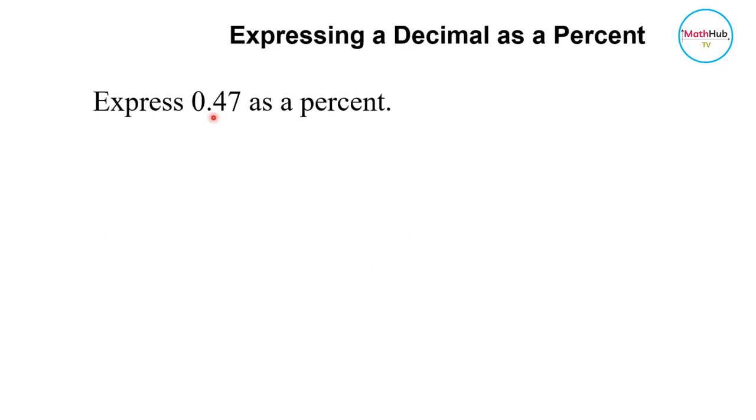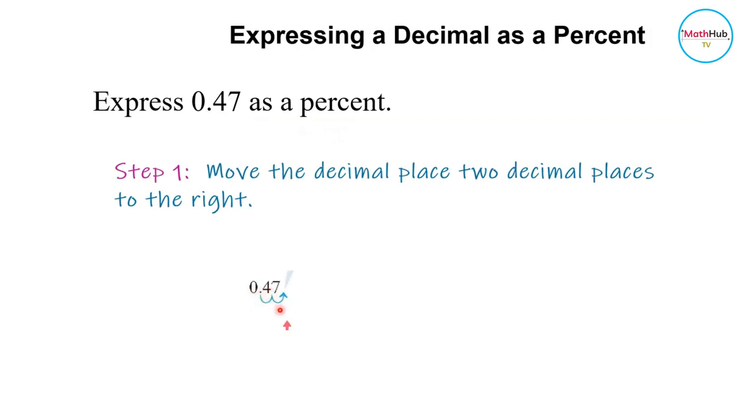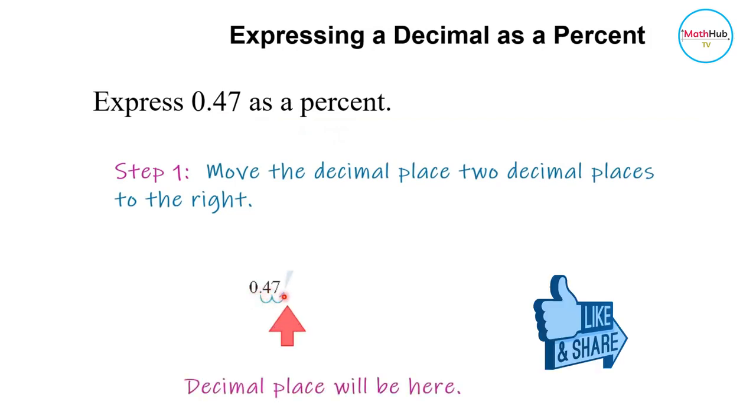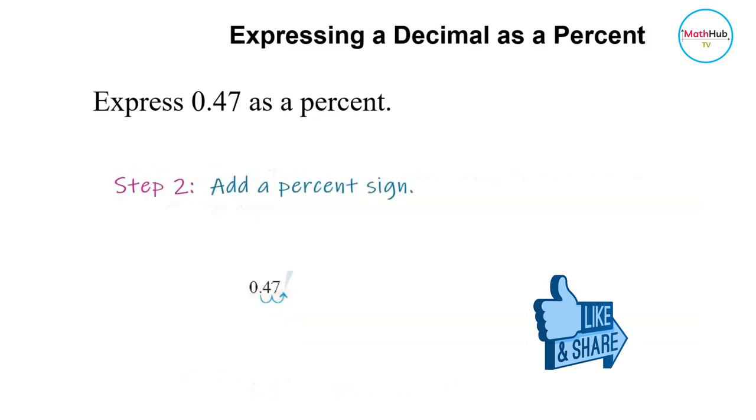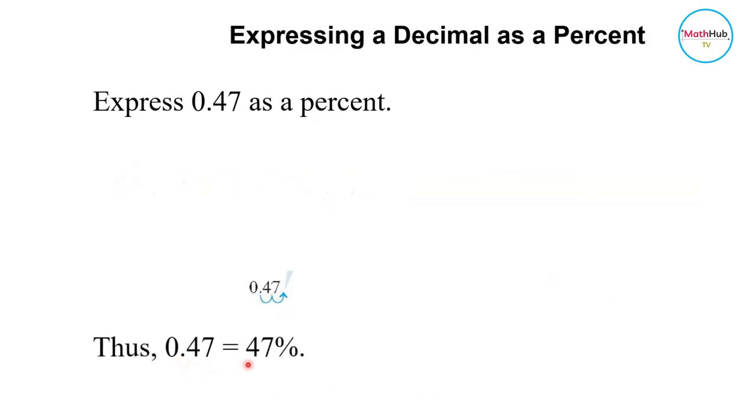I want to express 0.47 as a percent. All you need to do is move the decimal point two places to the right. It will become 47. Then you add a percent sign. Therefore, 0.47 is equal to 47%.